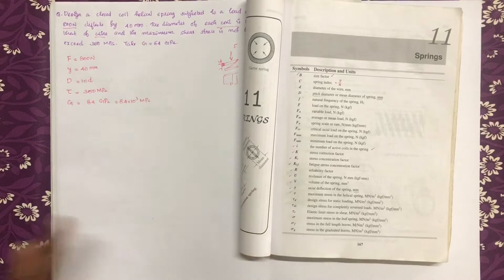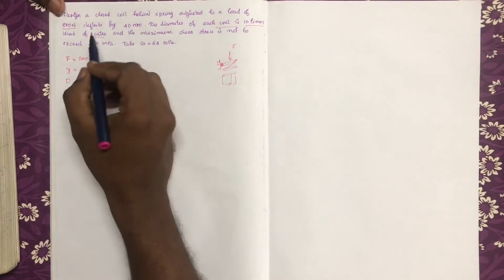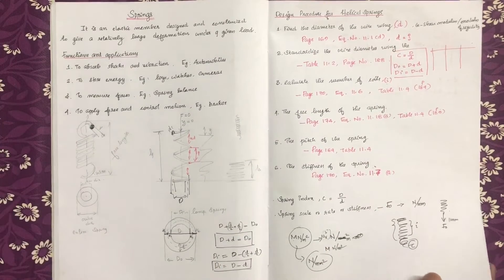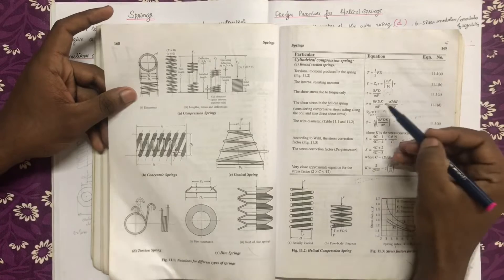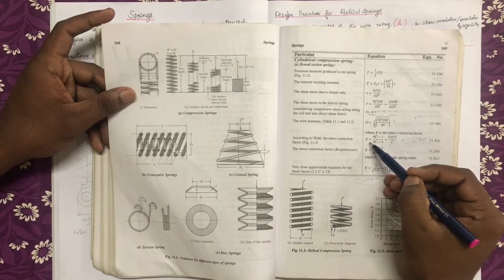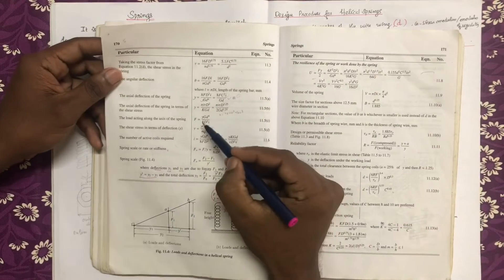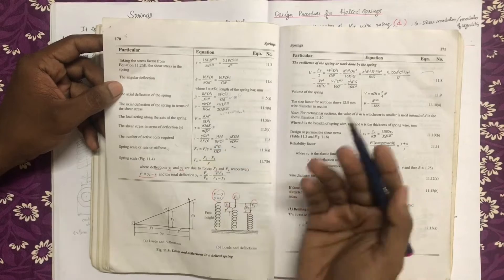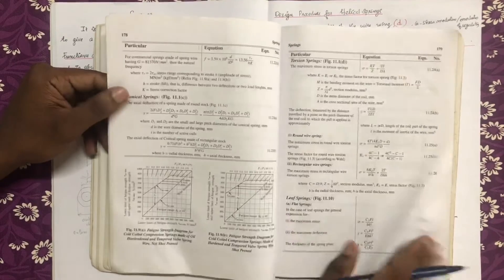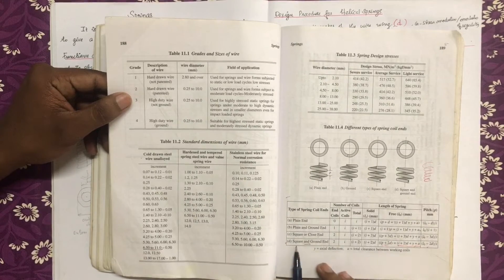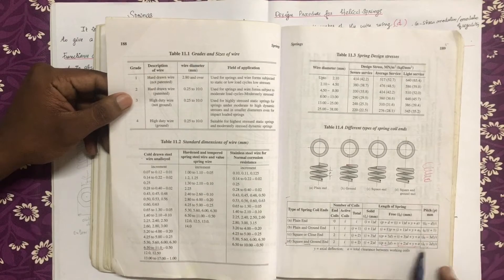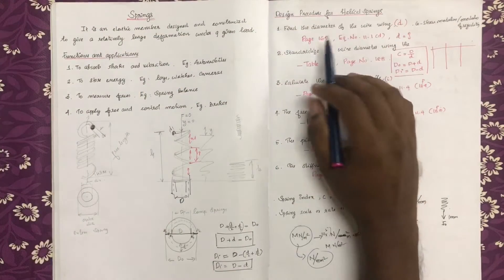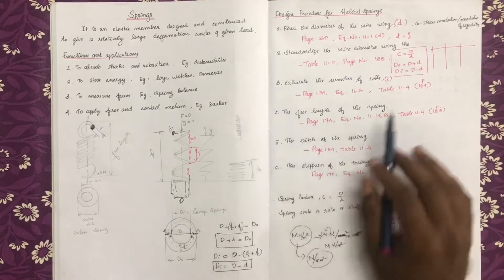Now let's do the design. First, we have to find the diameter of the wire. The design procedure steps are: diameter of the wire, standardization, number of coils, free length, pitch, and stiffness.